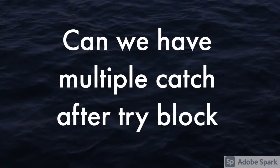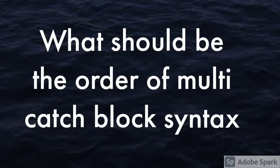The next question is: can we have multiple catch blocks after a try block? Yes, you can — you can also separate them with the pipe operator, or you can write multiple catch statements after try without using it. The follow-up question was: what should be the order of multiple catch blocks? Make sure the higher-order (parent) exception comes last and the child exception is covered first, otherwise you will get an unreachable code error.